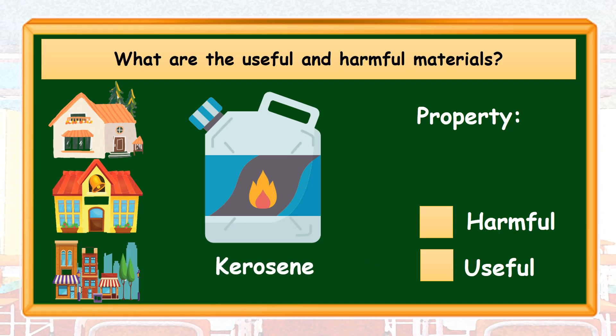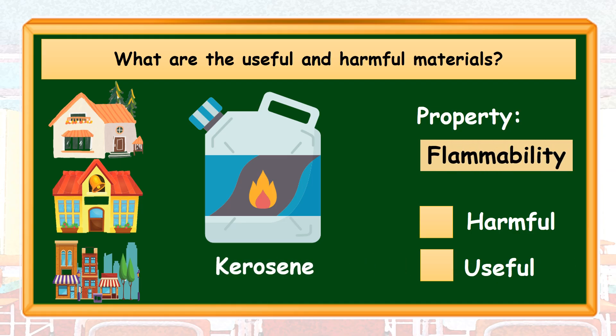The next material that we have is kerosene. Kerosene possesses the property of flammability, because it is used to start a fire. Based on its property, kerosene can be harmful or useful. Its harmful effect is it can cause an explosion, while its usefulness is it is used to produce fire.